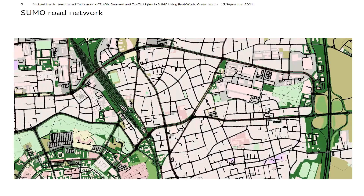Here you can see an excerpt of the network imported from OpenStreetMap. The entire network is about 10 by 10 kilometers and covers more than 12,000 edges, including urban, rural, and highway roads. It includes 5,600 junctions with 120 traffic light controlled intersections, and we have data for 75 of these signalized intersections.